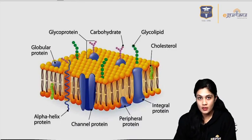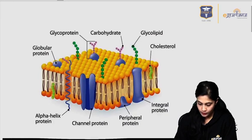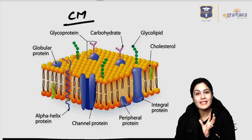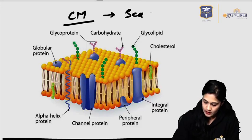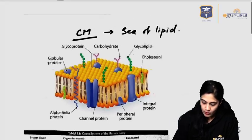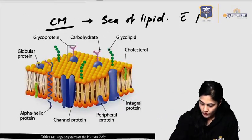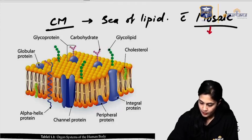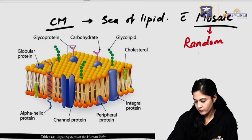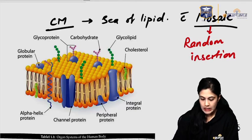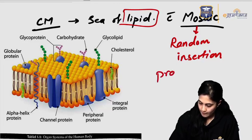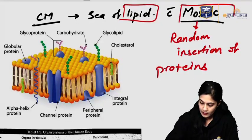We discussed the circulatory system, specifically the heart. Now, this is a diagram of the cell membrane. The cell membrane is described as a 'sea of lipid.' It is also described as a sea of lipid with mosaic. Mosaic literally means random insertion — random insertion of proteins.